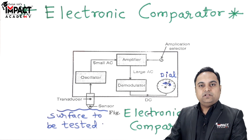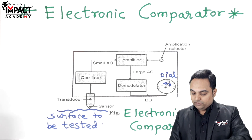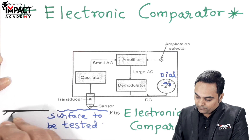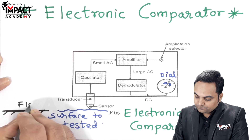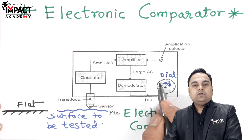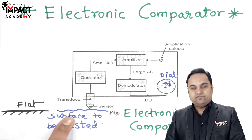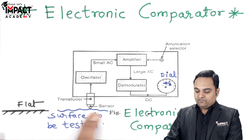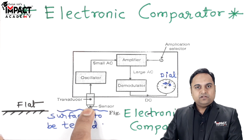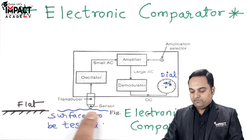I will just take an example: if the surface is perfectly flat — if it is perfectly horizontal or a flat surface — then for a perfectly flat surface, the reading shown by the dial would be zero. So just by looking at the dial, we can say that the surface is flat or not. And if it has some waviness like shown over here, the surface to be tested — the sensor will first of all pick up the reading, that is it will pick up the variation over here.